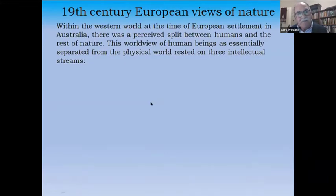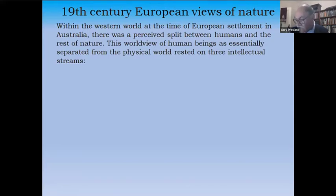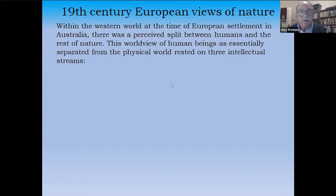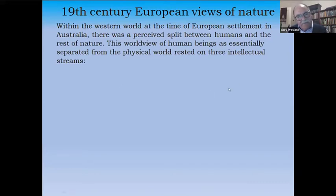It's not surprising that things such as identity and perceptions of nature are always culturally bound. So it should be no surprise that the immigrants and colonists who came in the 1830s from Europe had a completely different worldview — one in which there was a perceived split between humans and the rest of nature. They were essentially separated from the physical world.